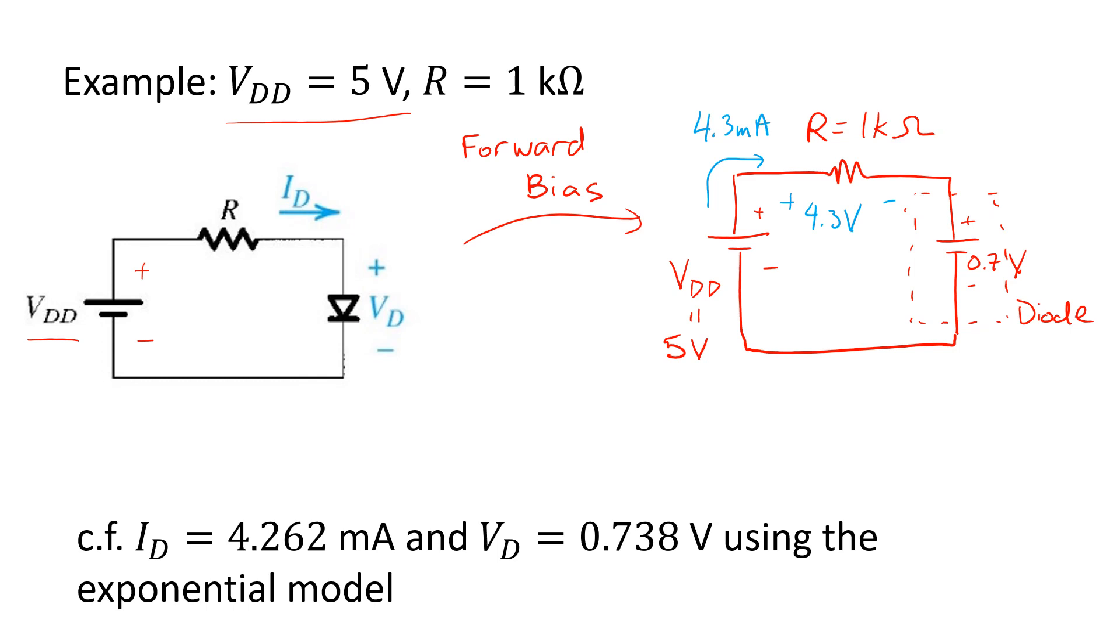It's interesting to compare that with the result that would be obtained by using, let's say, a graphical analysis and the exact voltage-current relationship of the diode. Using that exponential relationship, we could calculate that the drain current is closer to 4.262 milliamps and the forward voltage drop 0.738 volts. So you see, there is some error incurred by using the constant voltage drop model, but considering how easy it makes the calculation, it gives us a very good approximation - the difference between 4.3 milliamps and 4.26 milliamps being only about one percent.